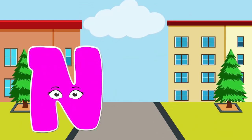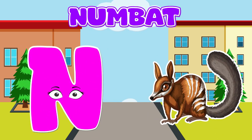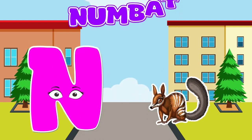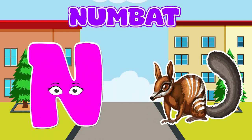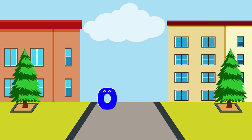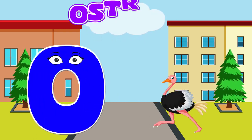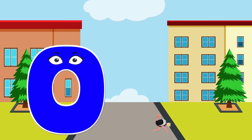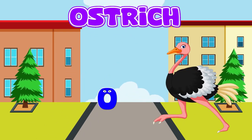N is for newt, n-n-newt. N is for newt, n-n-n-n. O is for ostrich, r-r-r-strich.